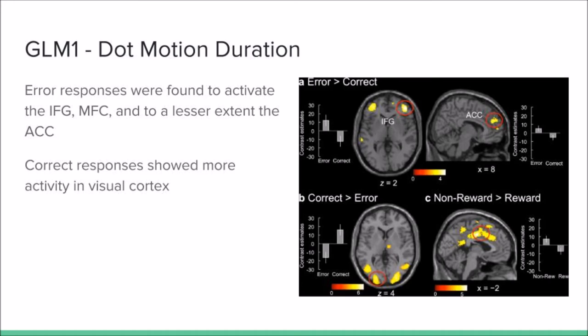Whereas for incorrect responses, other areas were activated, including, to some extent, the anterior cingulate cortex.